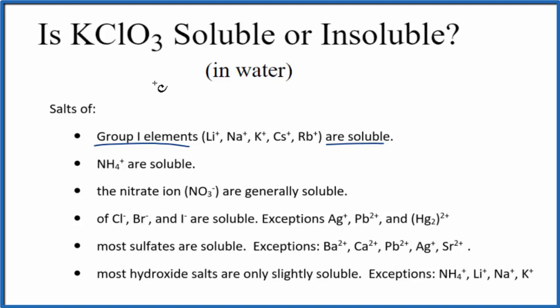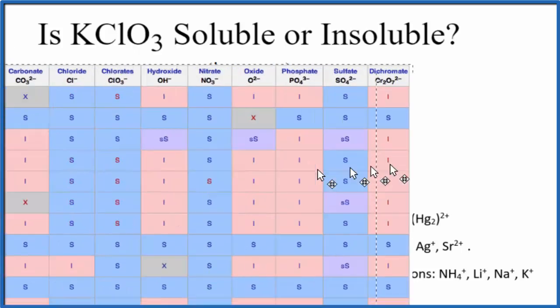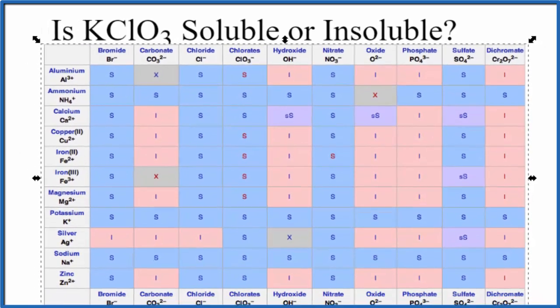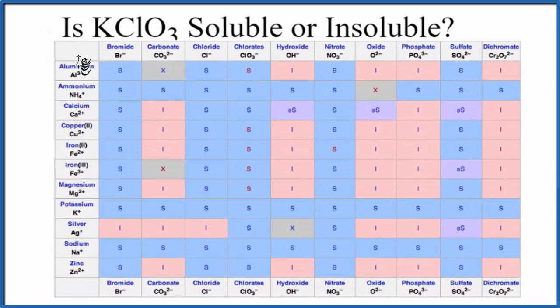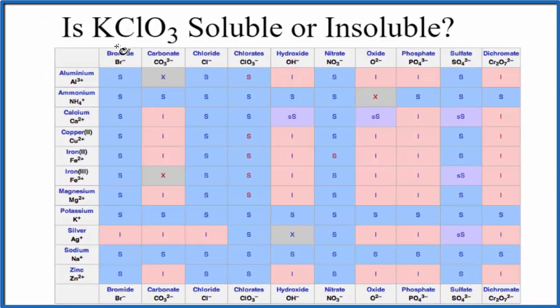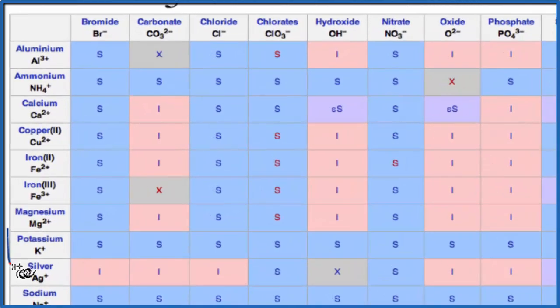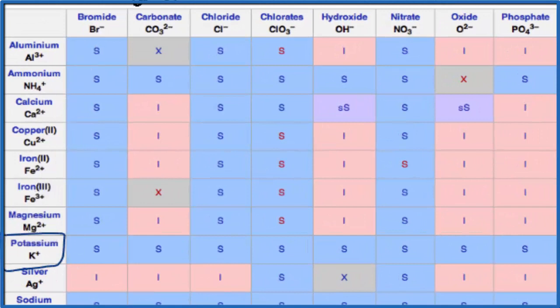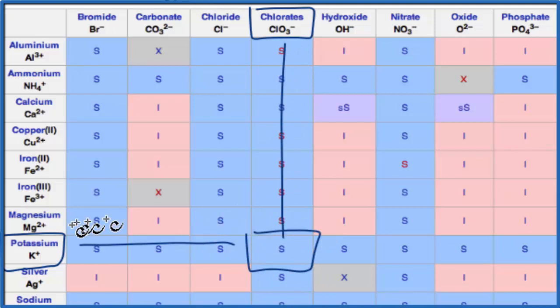We could also look at a solubility chart. So here's our solubility chart. The positive ions, they're right here. So we're looking for potassium right here, K plus. And then ClO3, that is the chlorate. It's ClO3 minus. And we can go across and down. And you can see that S. That means that KClO3 will be soluble in water.